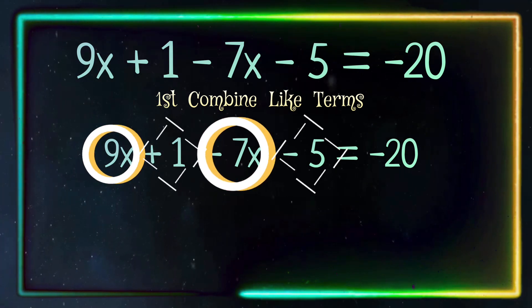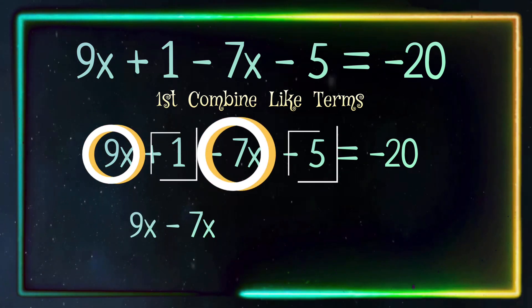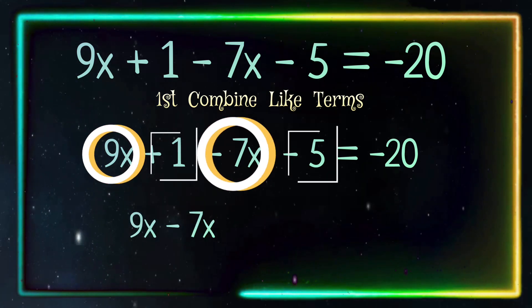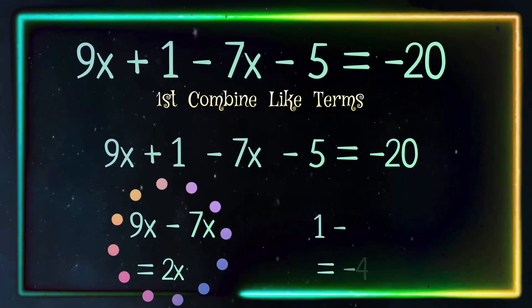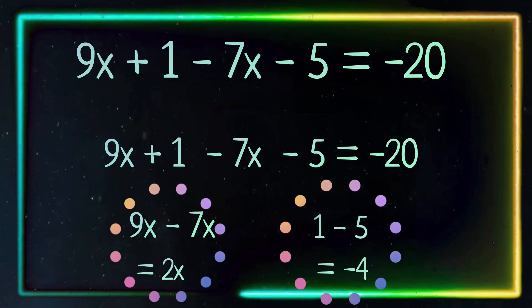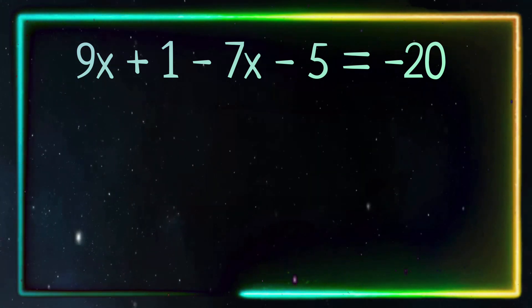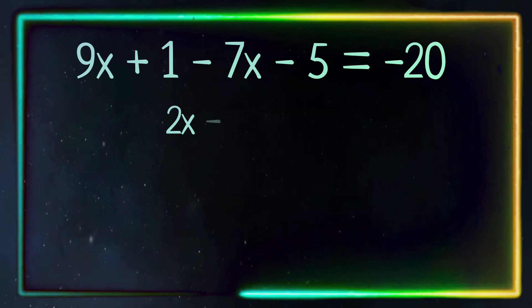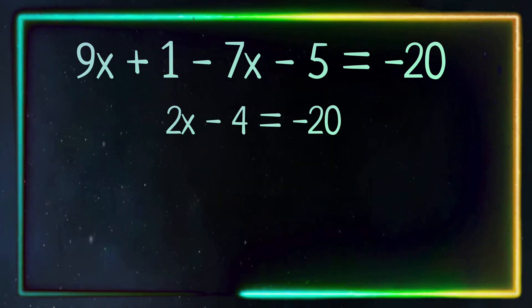For the x terms we have 9x and negative 7x. Now let's do the math. 9x minus 7x equals 2x. 1 minus 5 equals negative 4. Now our equation looks like this: 2x minus 4 equals negative 20.